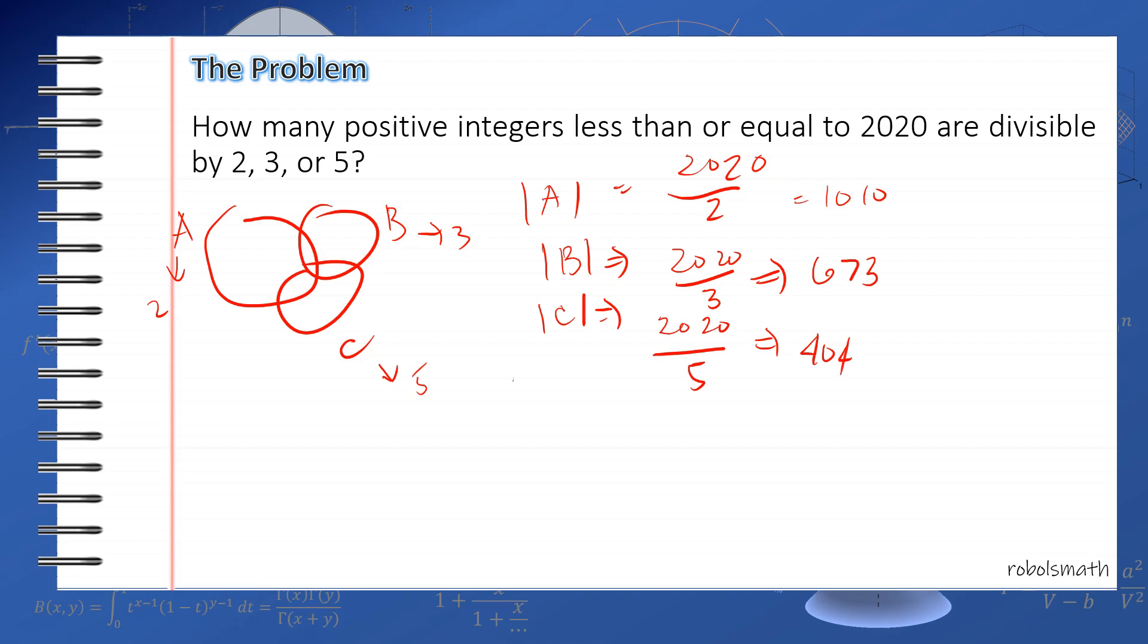Next, let's find the intersection of A and B. Again, when will they both be multiples of 2 and 3? That is when the number is divisible by 6. We computed this earlier, this is 336. Next, A and C, that's 2020 divided by 2 times 5, so that's 10. This is 202. And then B and C, we divide by 15. So the answer is 2020 divided by 15, that's around 134. We're choosing the integer less than what we get here.